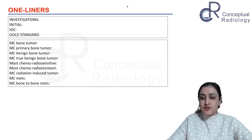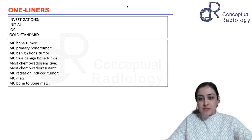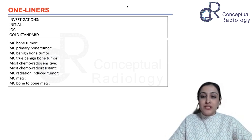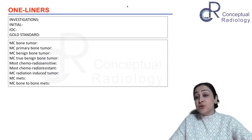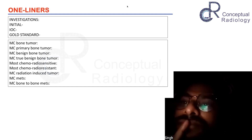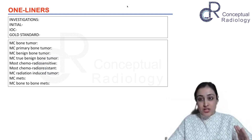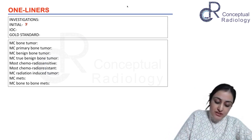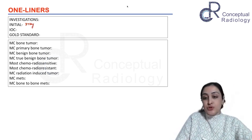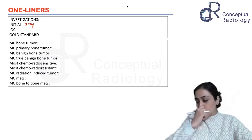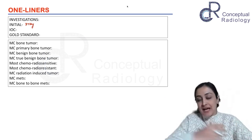Anytime we investigate a bone tumor, the first investigation is always an X-ray — even if given the option between an X-ray and an MRI, you still choose the X-ray. A bone tumor investigation cannot start or end without a radiograph.